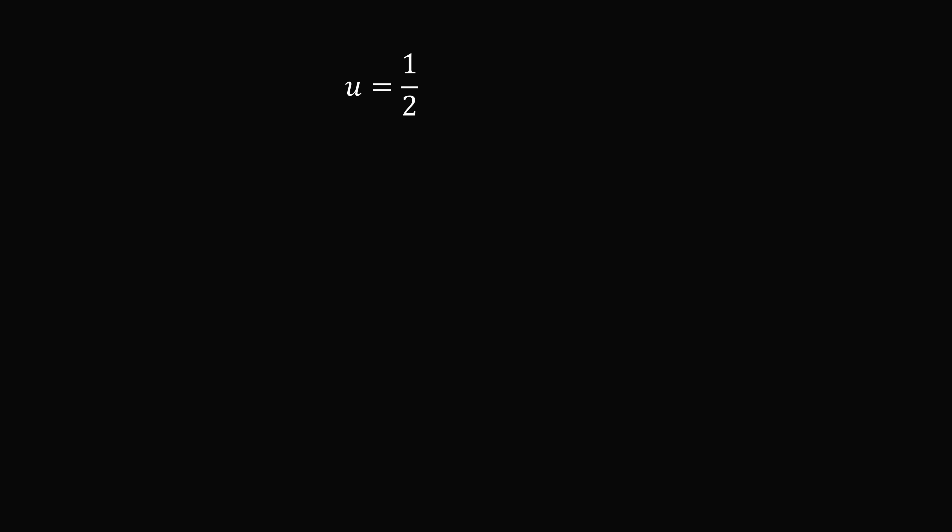So, we figured out that u is equal to 1 half. This is equal to tangent of theta. Let's now solve for cosine theta and sine theta. So, let's set up a triangle where theta is here. We have 1 over 2, which is equal to the tangent of theta. This means the hypotenuse is the square root of 1 squared plus 2 squared, which is equal to square root of 5. Therefore, cosine of theta is equal to 2 divided by the square root of 5, and sine of theta is equal to 1 divided by the square root of 5.